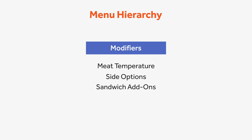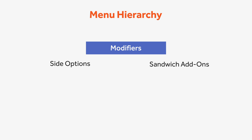Examples of modifier groups could be meat temperature, side options for a sandwich, or sandwich add-ons. Within these groups are the actual options that are chosen. For example, a guest can choose between a side salad or fries for side options, or ask to add bacon or avocado for sandwich add-ons.